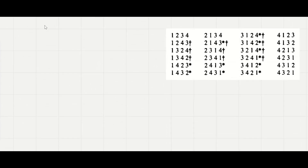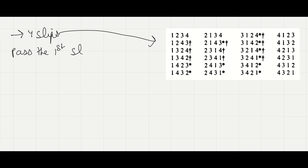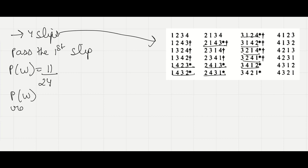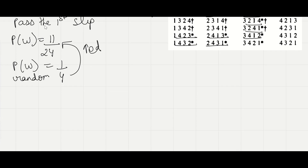Similarly, if we had 4 slips, the possible permutations are listed, and with the same strategy — pass the first slip and choose the next slip greater than the first — we find 11 star cases where we make the correct decision. So our probability of winning is 11/24, compared to 1/4 with a random guess. Doing this strategically increases our probability of winning. However, working through all permutations up to 100 slips is quite a difficult task, so we will develop a general formula.